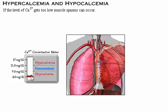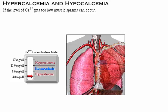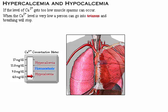If the level of calcium gets too low, muscle spasms can occur. When the calcium level is very low, a person can go into tetanus due to a lack of calcium available to trigger release of neurotransmitter at the neuromuscular junction. If the calcium level goes too low, breathing will stop. It is very important to maintain calcium levels within a specific range.